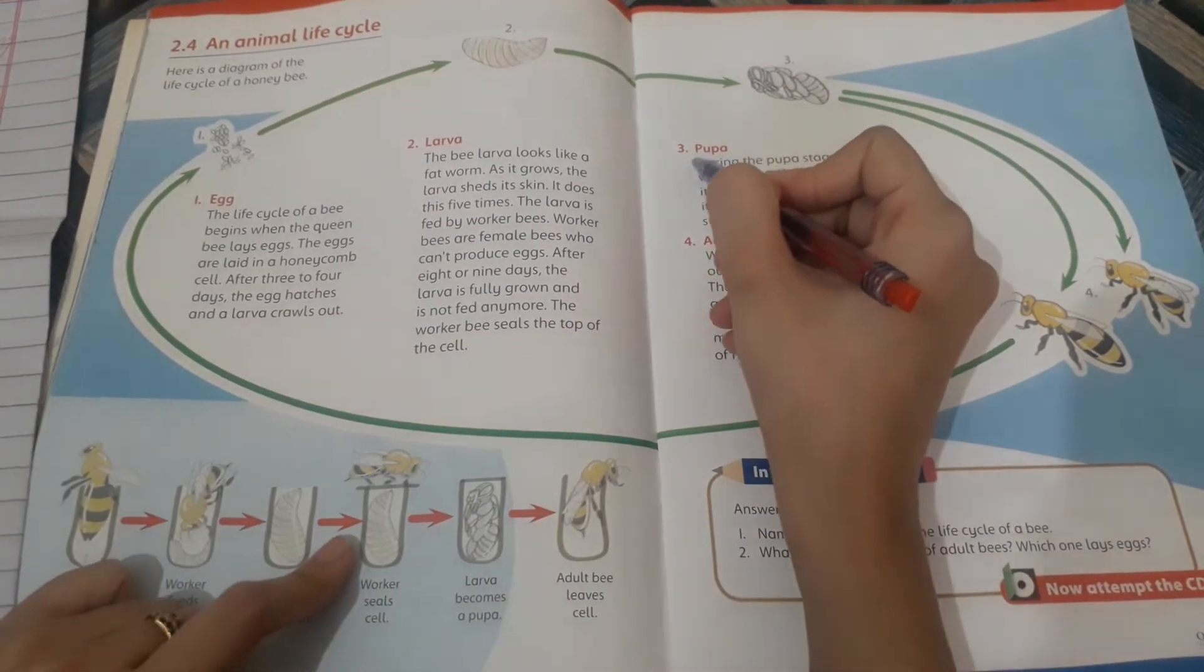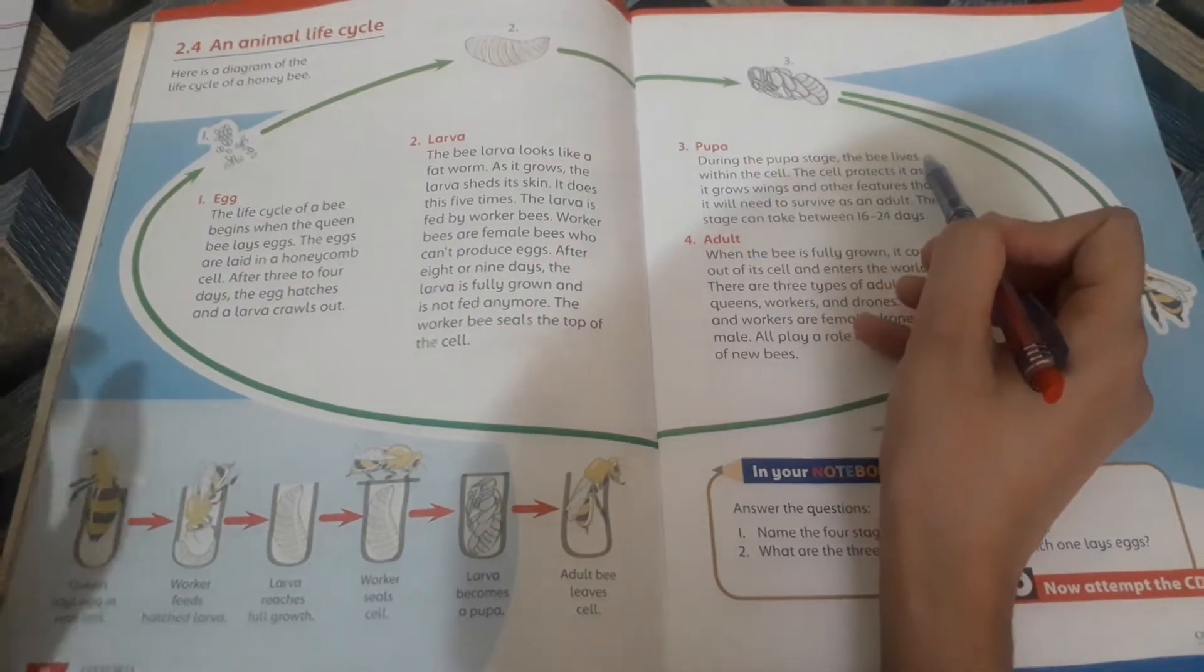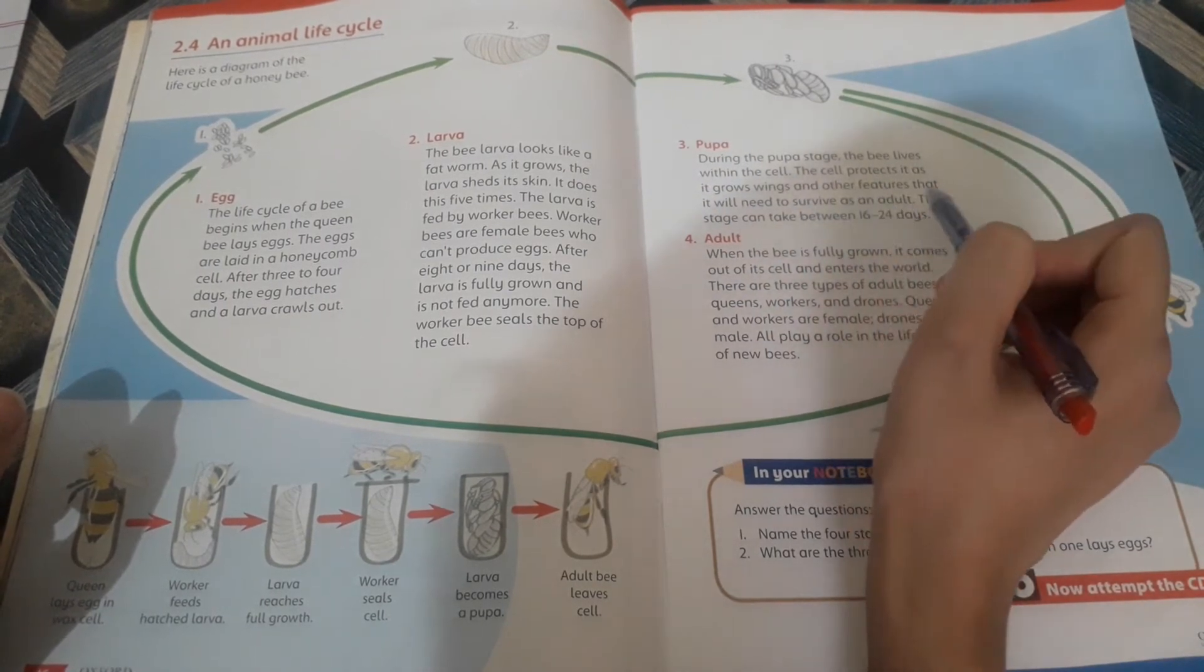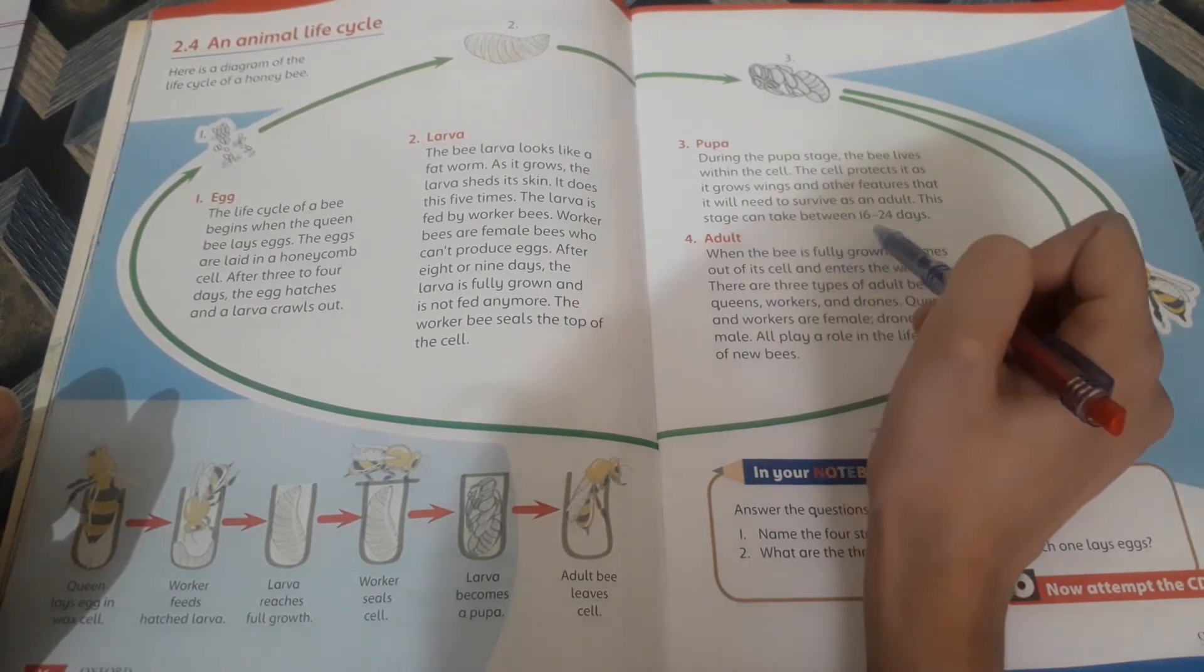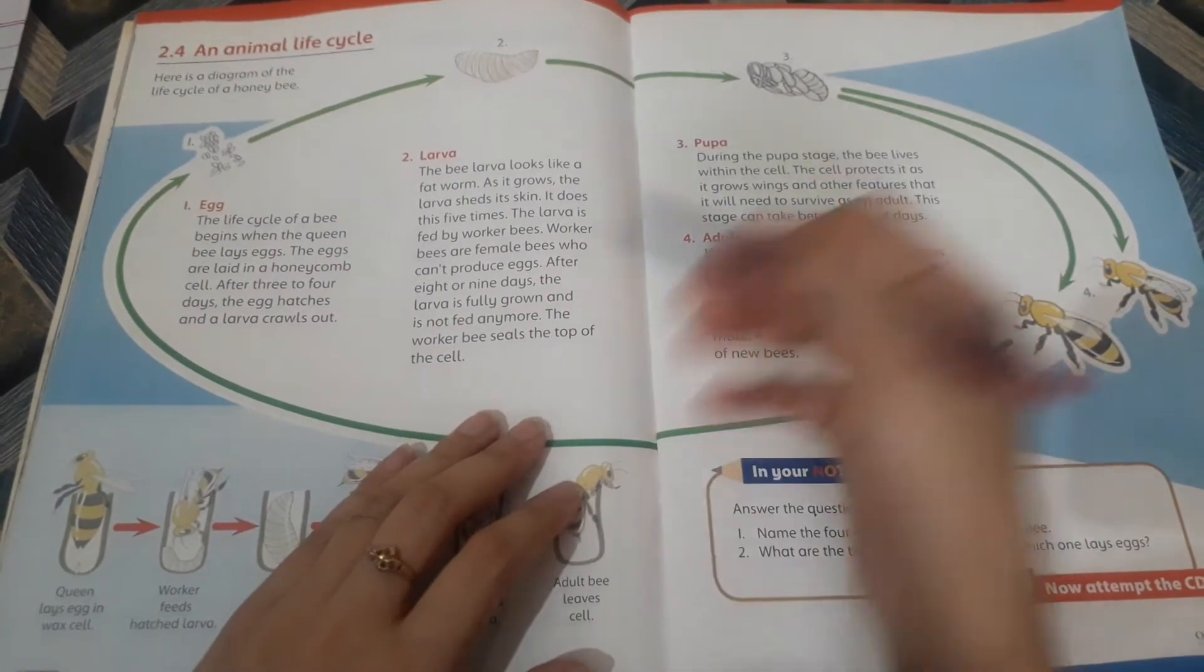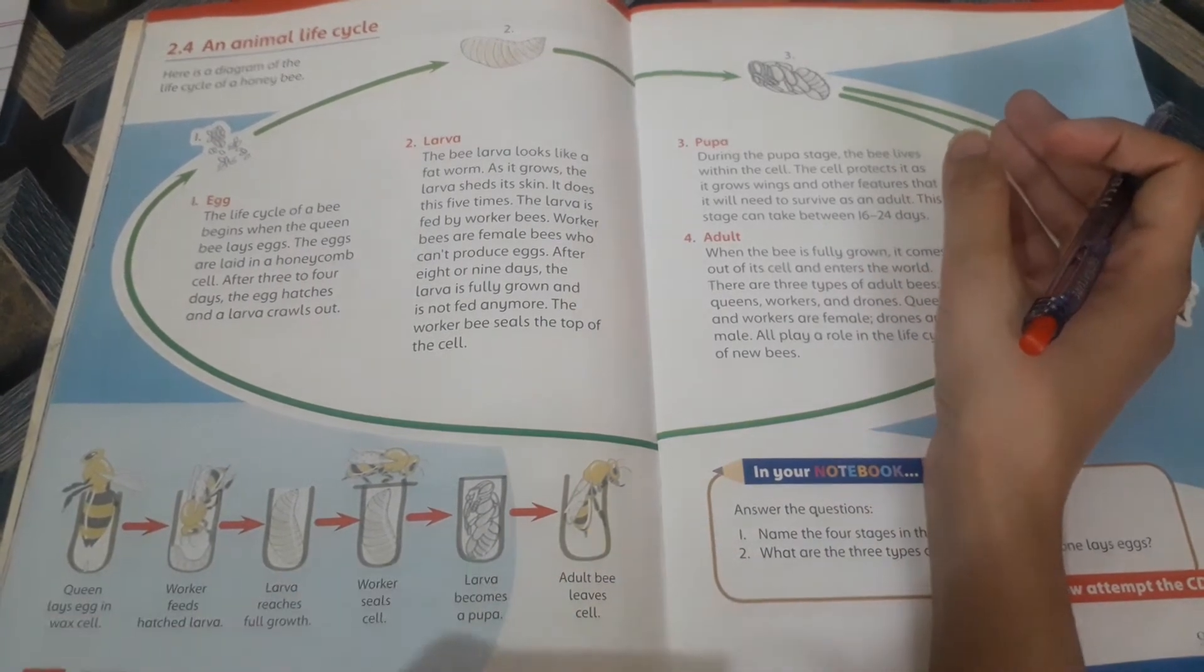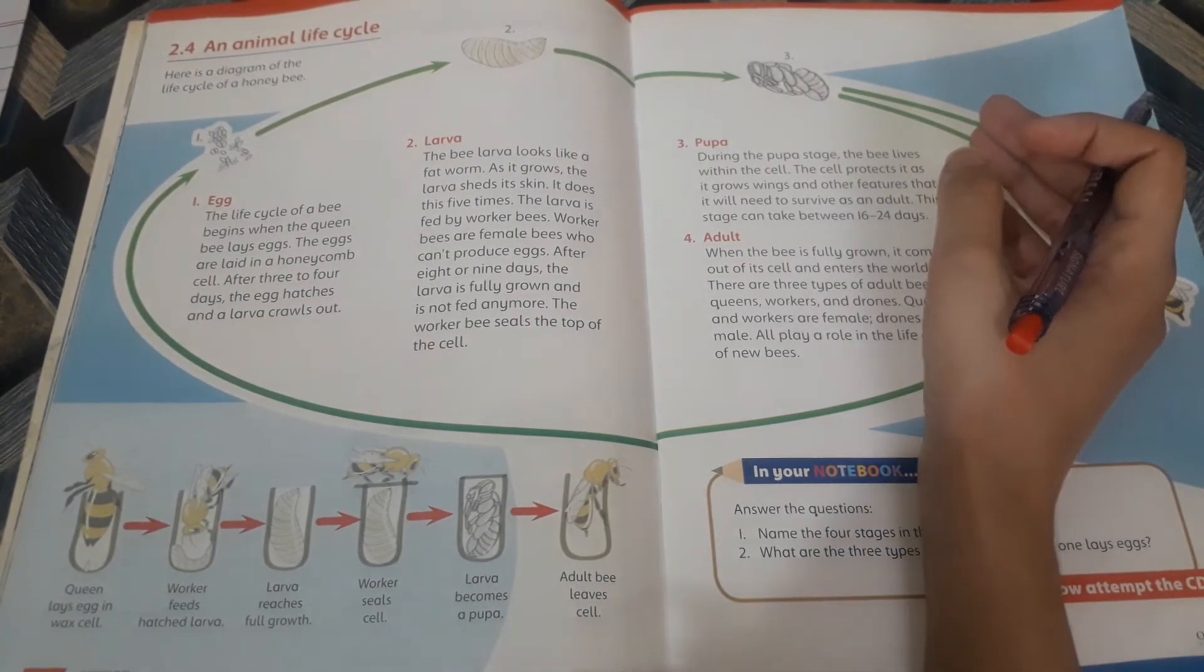Third step is pupa. During the pupa stage, the bee lives within the cell. The cell protects it as it grows wings and other features that it will need to survive as an adult. This stage can take between 16 to 24 days. In the pupa, it makes its eyes, legs, and feathers.